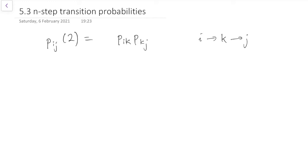But that middle state k can be any of the states. So we're going to have to sum up all those probabilities. That's going to be sum over all states, k.